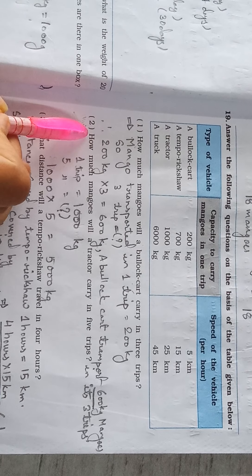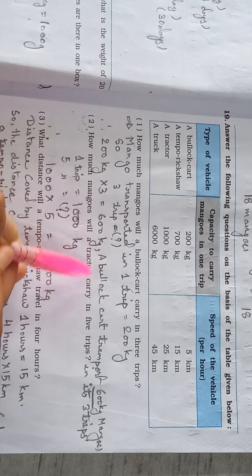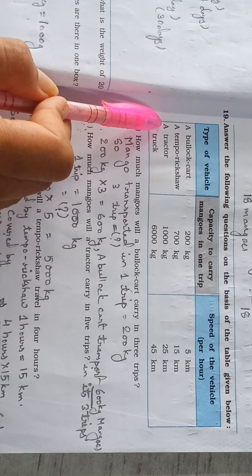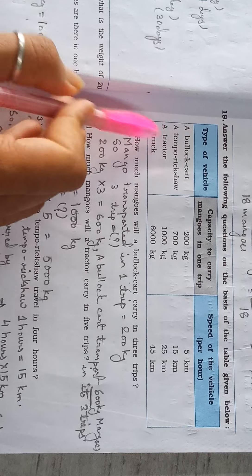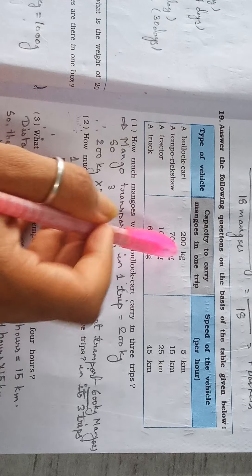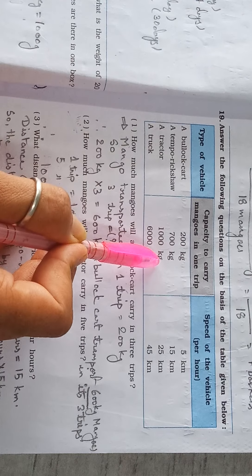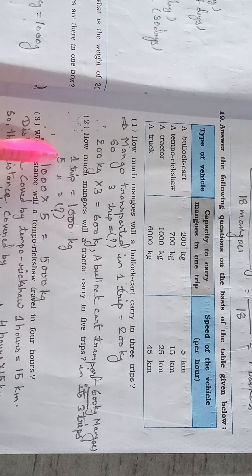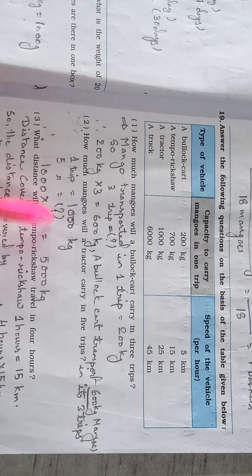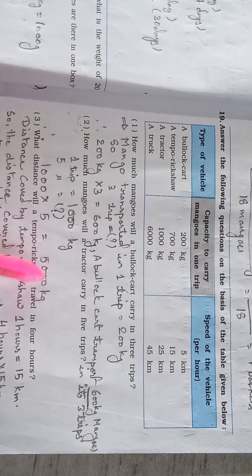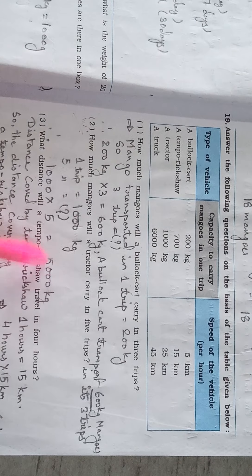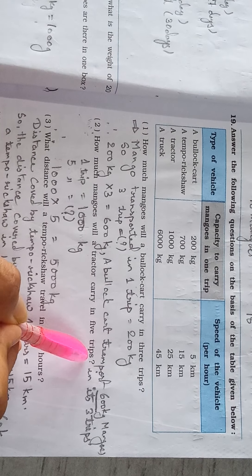Second question: How much mango will a tractor carry in 5 trips? First we check the table — a tractor carries 1000 kg in one trip. So for 5 trips, therefore 1000 multiplied by 5 equals 5000 kg. A tractor carries 5000 kg in 5 trips.